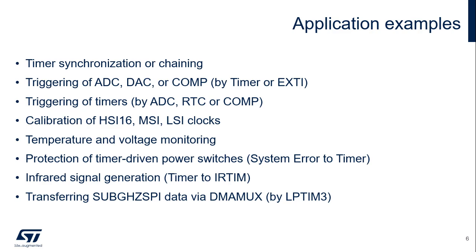The Interconnect Matrix is mostly used for synchronizing or chaining timers — for example, allowing a master timer to reset or trigger a second slave timer — triggering an ADC, DAC, or comparator through a timer event or an external interrupt, and triggering a timer through an ADC when a predefined threshold value is crossed by the analog input.